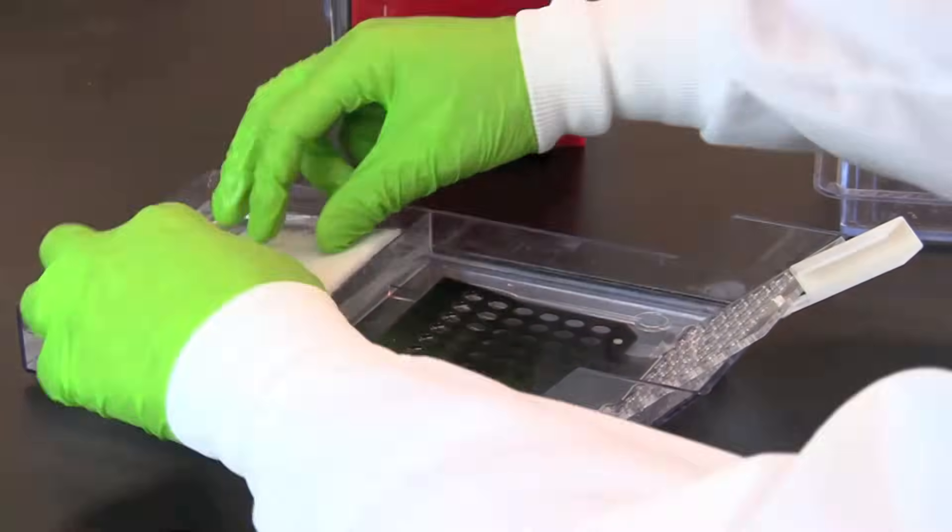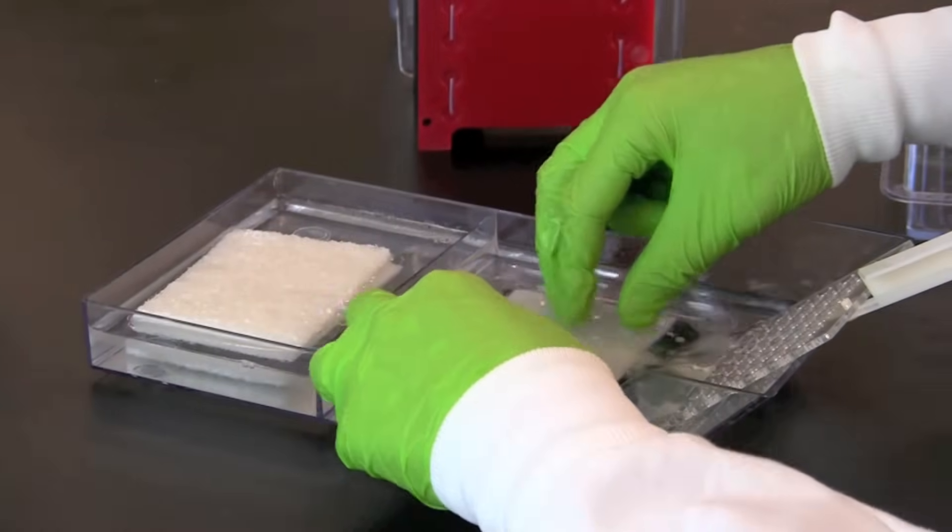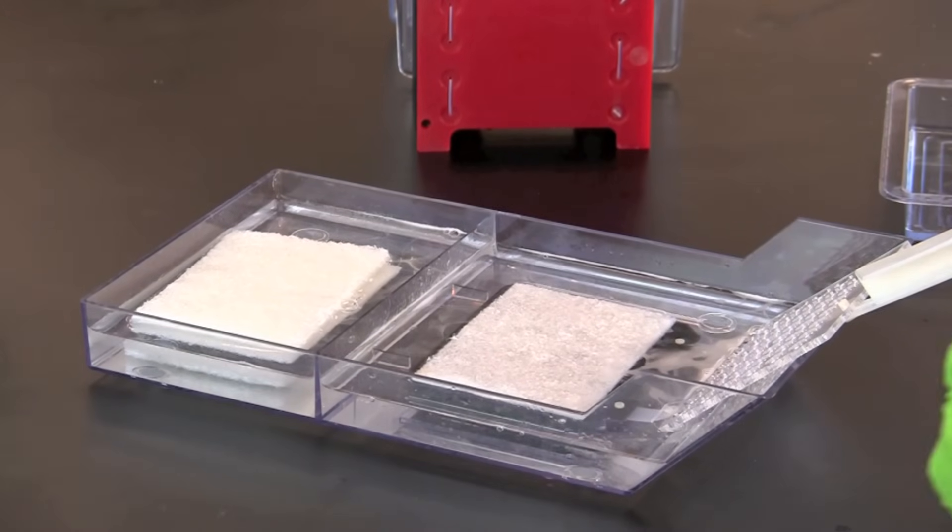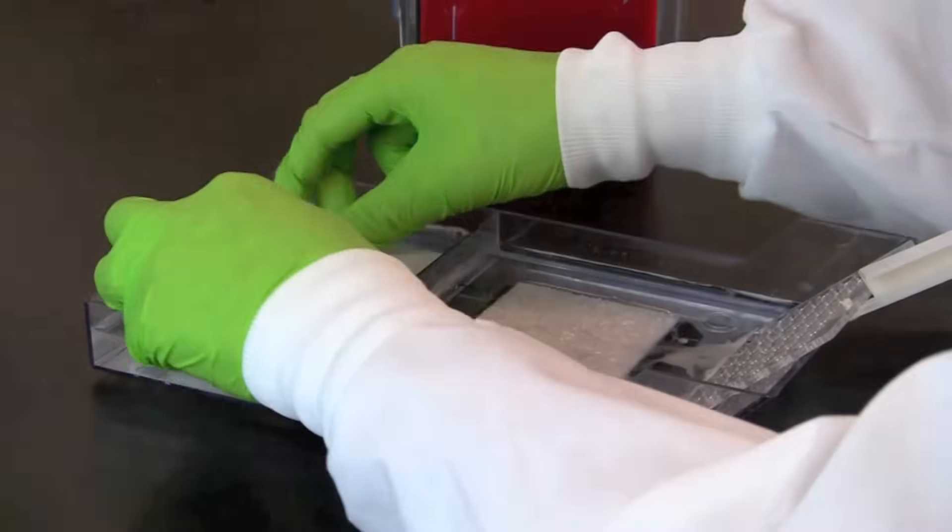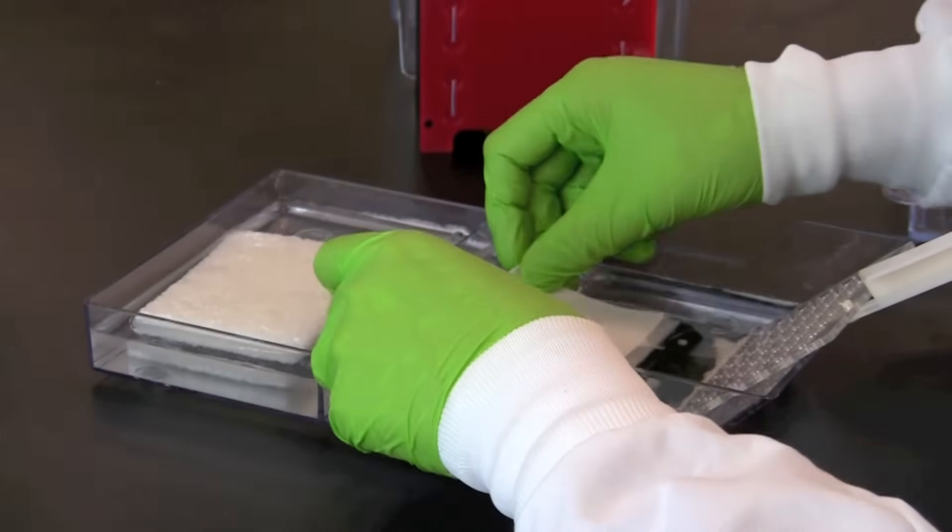Lay one fiber pad flat on the black plastic. Next, wet a piece of blotting paper and place it on top of the pad. Be careful to avoid any bubbles between the pad and the paper and make certain the buffer covers the paper.